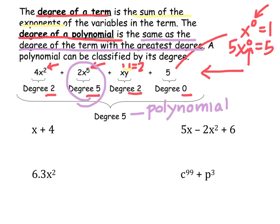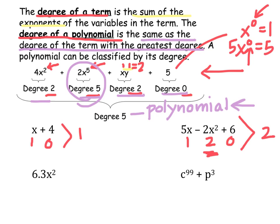We find the degree of each of the terms, and then the term with the highest degree — in this case 2x to the 5th — determines the degree of the polynomial, which is 5. For x plus 4: x has degree 1, 4 has degree 0, so the polynomial is degree 1. For 5x minus 2x squared plus 6: degree 1, degree 2, degree 0 — so degree 2. 6.3x squared has degree 2. And c to the 99th plus p cubed: degree 99 and degree 3, so the polynomial is degree 99.